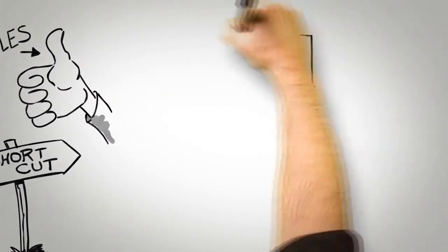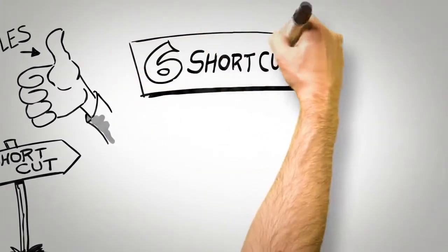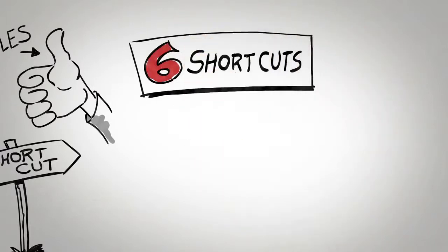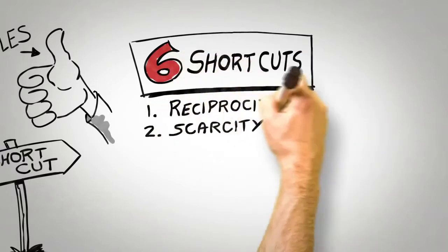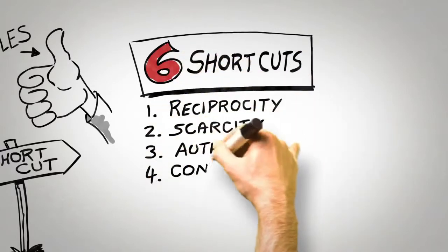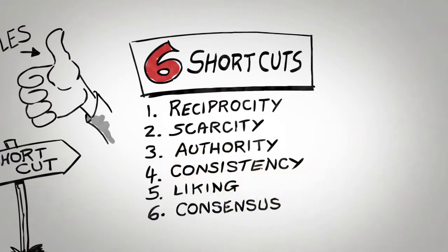My own research has identified just six of these shortcuts as universals that guide human behavior. They are reciprocity, scarcity, authority, consistency, liking, and consensus.